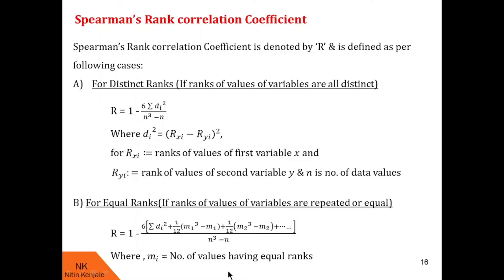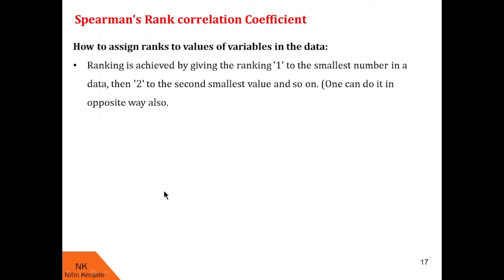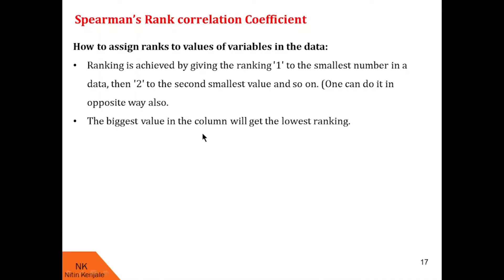Now we will proceed to learn how to assign ranks to the values of the given variable. Ranking is achieved by giving rank 1 to the smallest number in the data set, then 2 to the second smallest, and so on. One can also do it the opposite way — assigning rank 1 to the biggest number. Note that some values in the data set may be repeated; in that case, we give the mean rank or the average rank to such values.